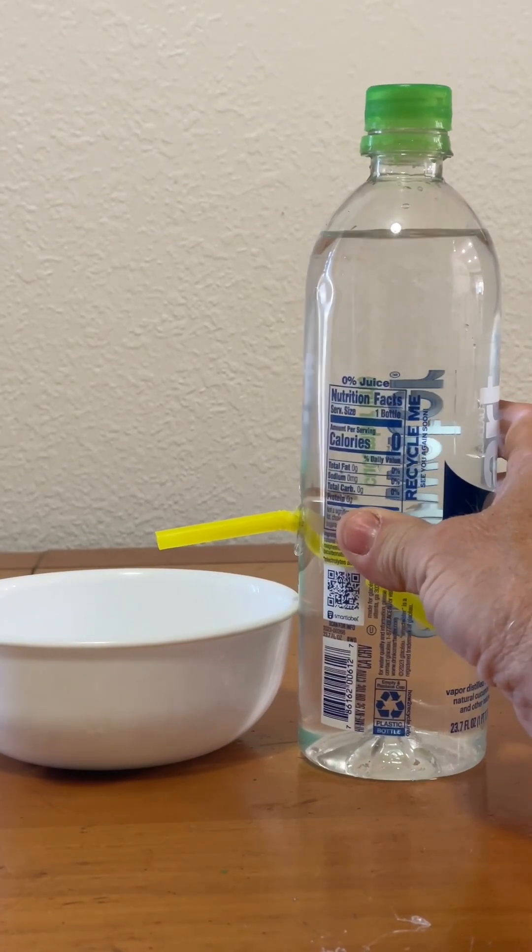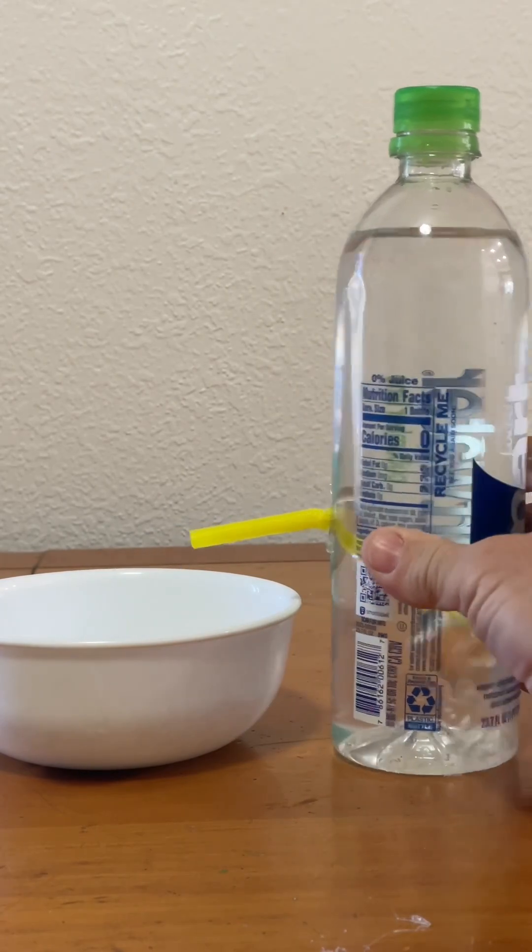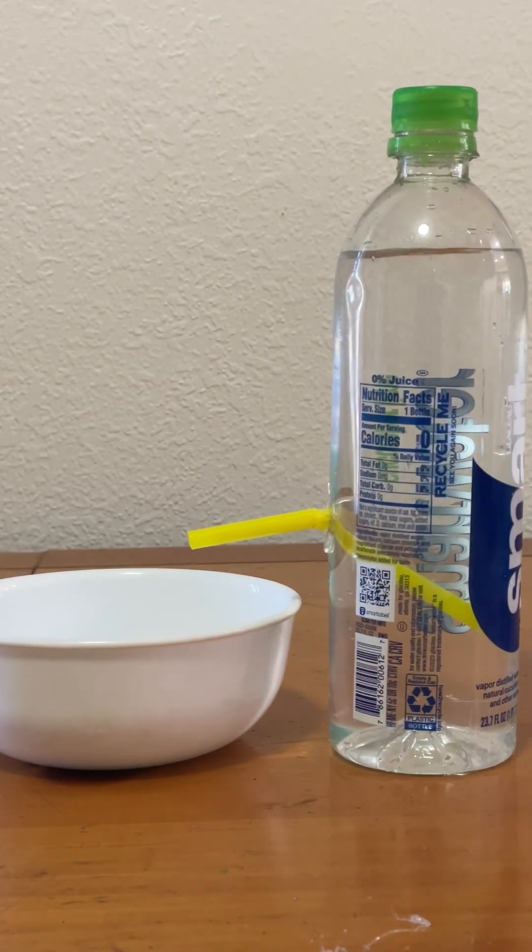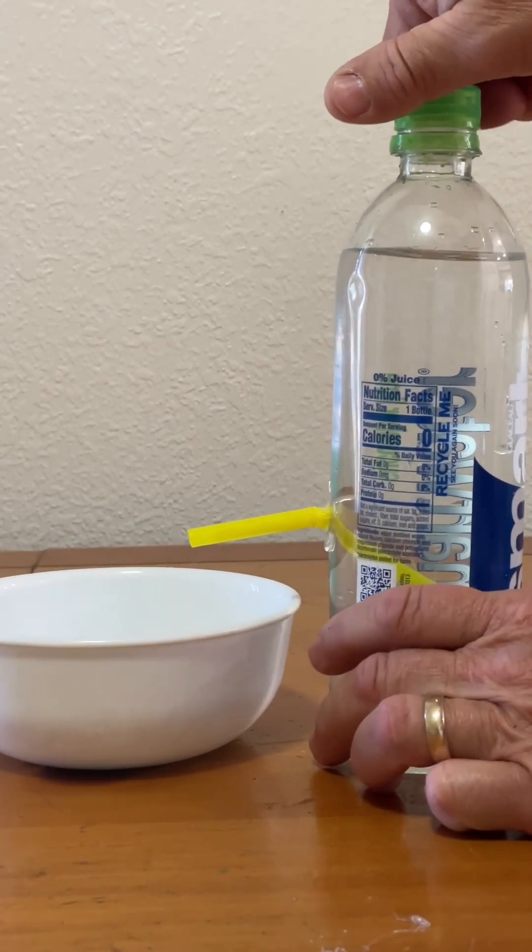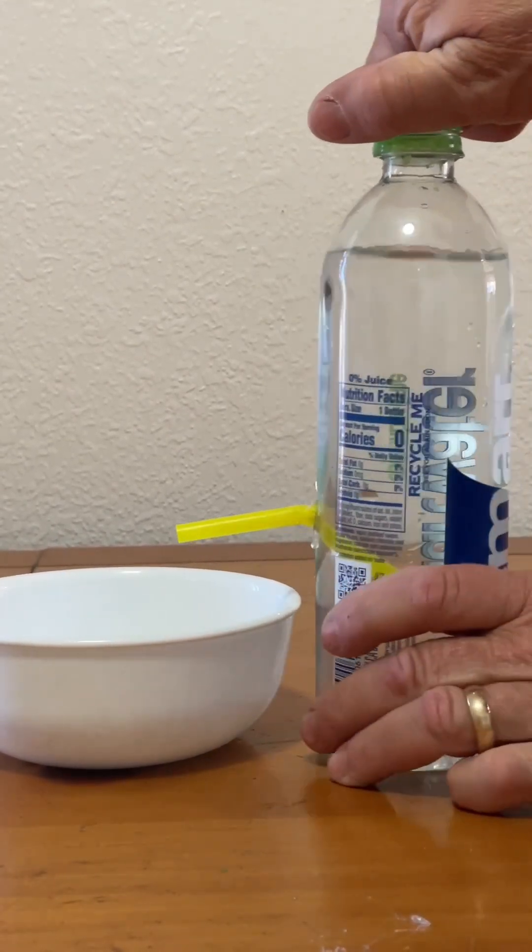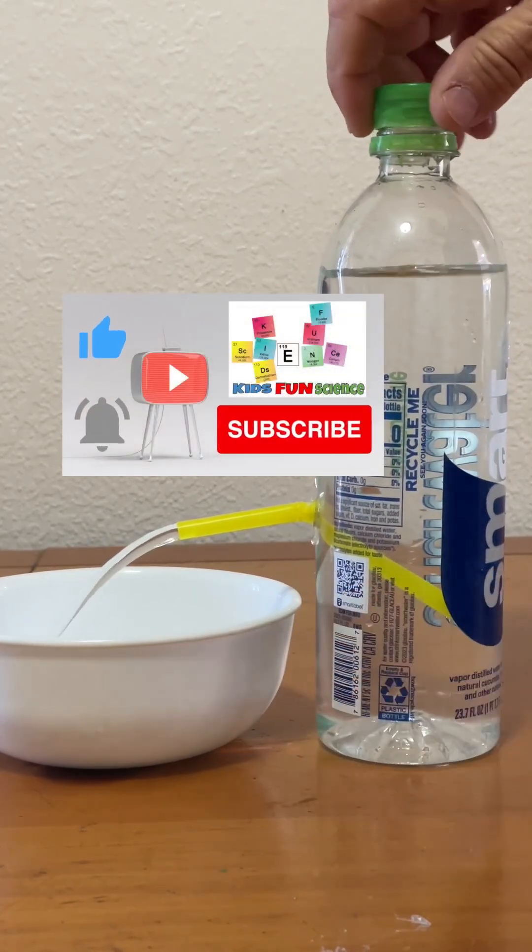Here again, I squeeze the outside, increasing the pressure on the inside of the bottle, and the water comes out. Or you can also take off the cap, which is going to push down the air pressure on the outside. The atmospheric pressure is going to push down and release the water.